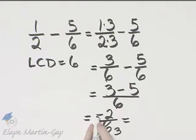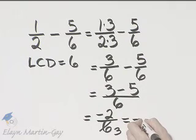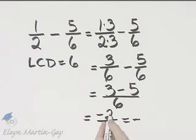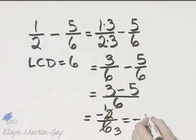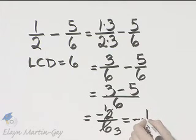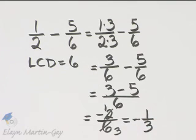Now I'm going to take this negative and place it in front. So I can think of 2 divided by 2 as 1, and this simplifies then to negative 1/3.